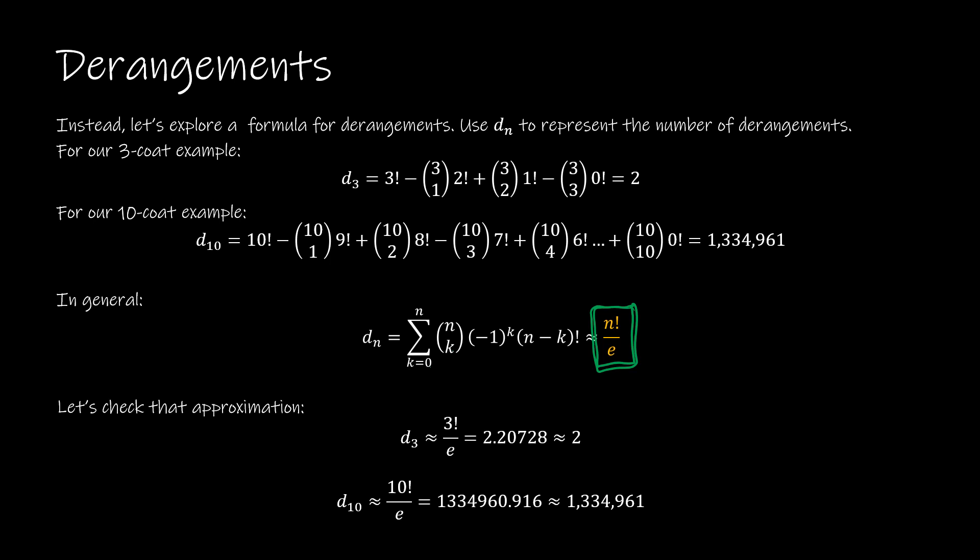And if you use your calculator to find that approximation, 3 factorial divided by e gives me 2.207, which rounds to 2, which matches what I had found before. If I take 10 factorial divided by e, I get 1,334,960.916, which rounds to exactly what I found when I did it by hand.